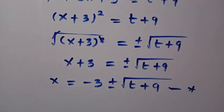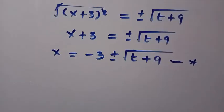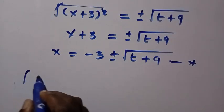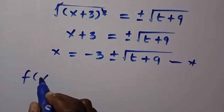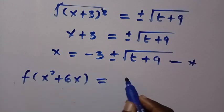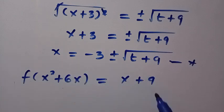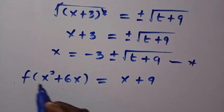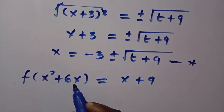Now, after getting this, let's substitute it into the original function. The function says f(x² + 6x) = x + 9, but x² + 6x...